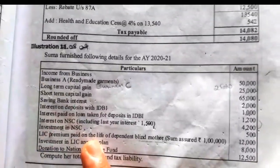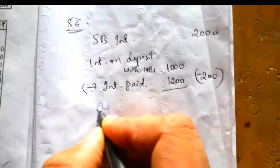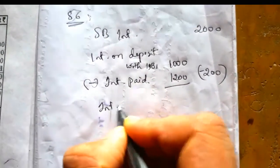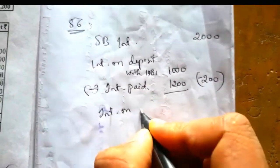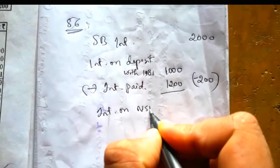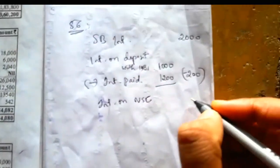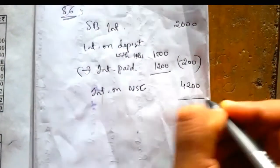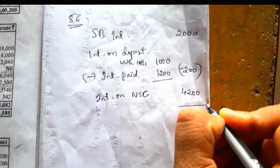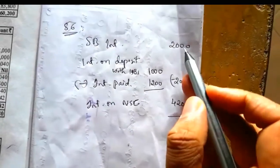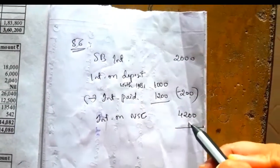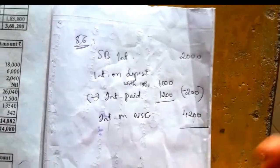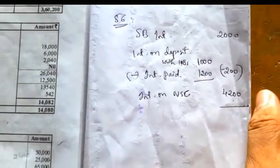Next, interest on NSC — income from other sources — total NSC interest is 4,200. So total income from other sources under Section 56 is: 2,000 minus 200 (net IDBI) plus 4,200.